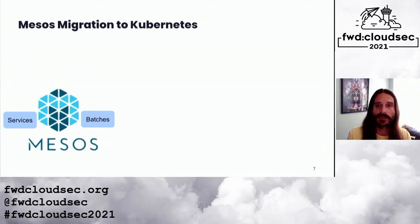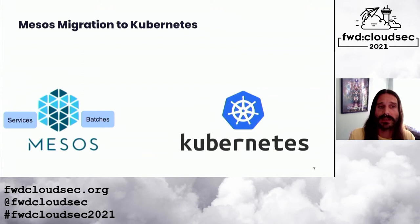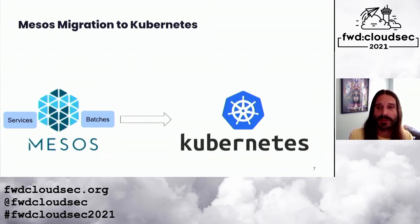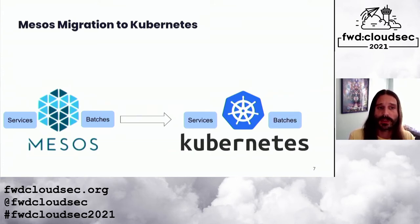Workload developers used an abstraction layer provided by the infrastructure team and didn't need to directly access, nor did they even need to worry about, the underlying technology. Over time, Kubernetes gained a lot of popularity in the community, and we eventually decided as a company to migrate to Kubernetes for its pluggable components, extensibility, and community support. The migration unlocked a lot of new use cases beyond just running services and batch workloads, which brought lots of interest from other development teams within Yelp.